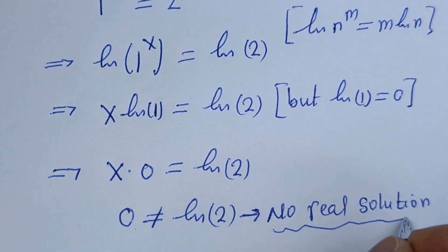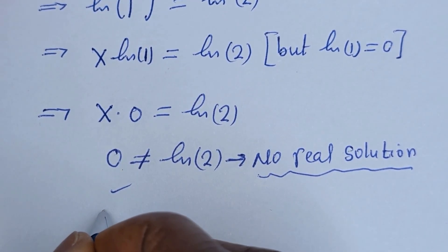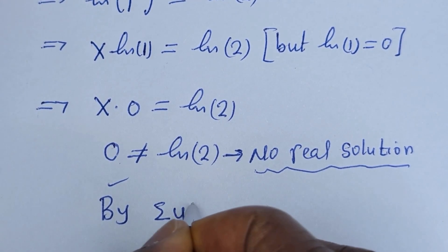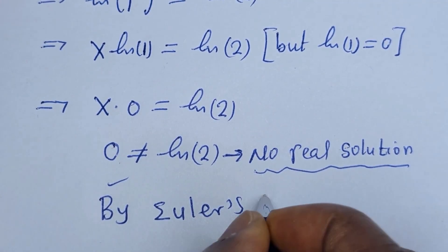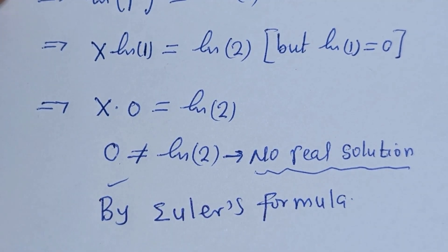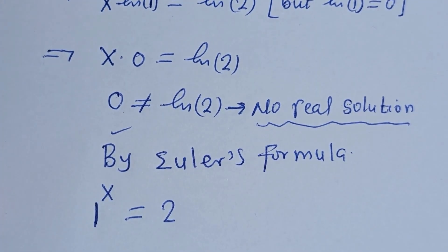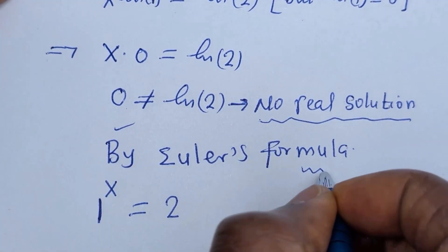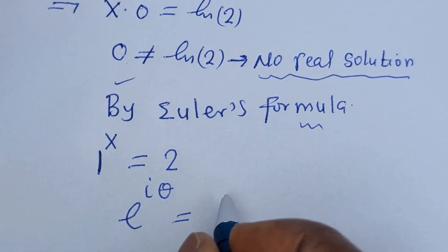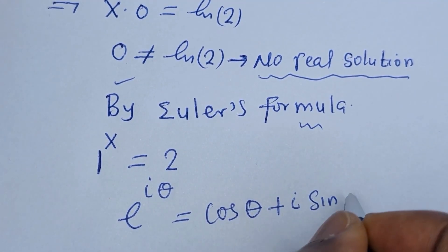But since there is no real solution, we can generate a complex solution. It has a complex solution using Euler's formula. By Euler's formula, we can find the value of s. That is, we have 1 raised to power s is equal to 2. Euler's formula says that e raised to i theta is equal to cos theta plus i sine theta.